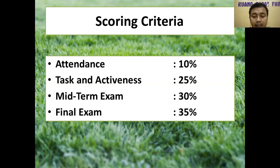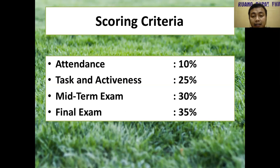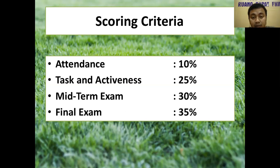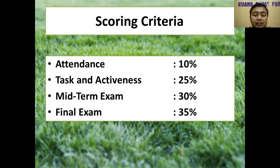Attendance, tasks, and activeness will be 35%. The rest will be your mid exam at 30% and final exam at 35%. Your mid test will be in the form of multiple choice and essay questions. Your final exam will be a project — subject to change depending on your progress. The mid exam covers theoretical assessment of what you've learned, and the final exam is a kind of project.